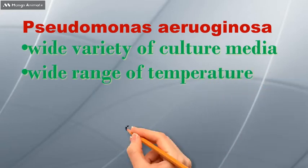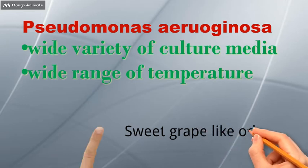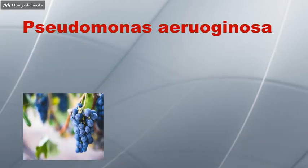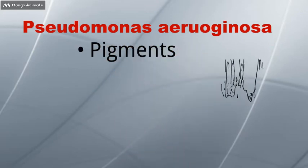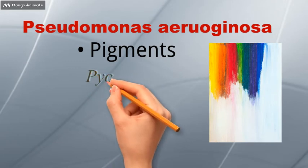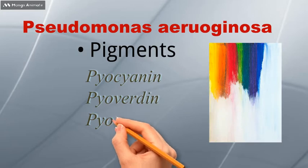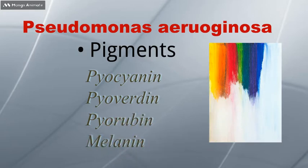Aeruginosa emits a sweet grape-like odour that is easily recognised. Another special feature is that they produce pigments. Mainly, they produce a blue-green pigment called pyocyanine. Apart from that, it produces some other pigments like pyoverdine, pyorubine, and melanine as well.